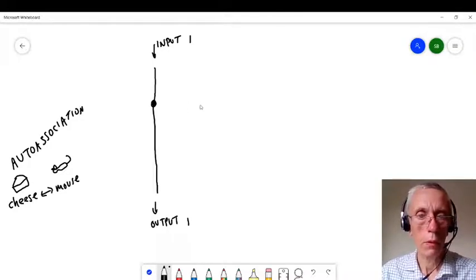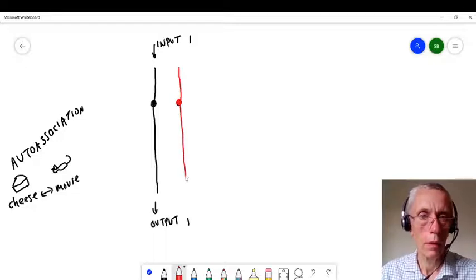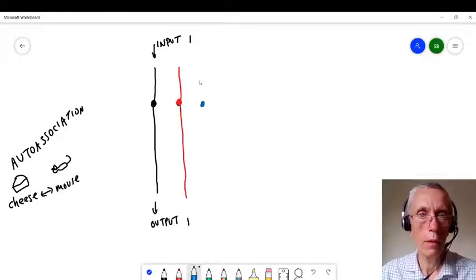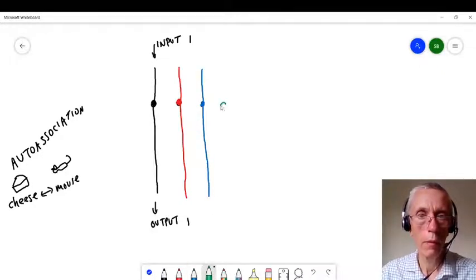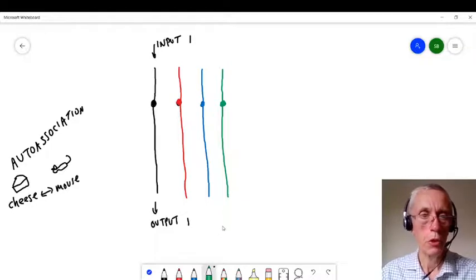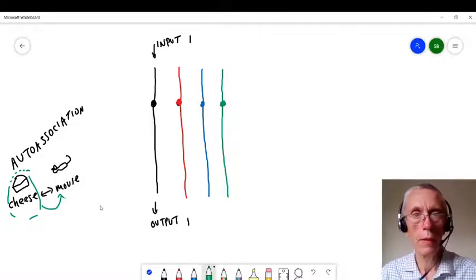So I'm going to add now a few more neurons. I think what I'll do is I'll make them a slightly different color. That'll help, I think. Got a red one, and a blue one, and a green one. So the idea is that once I'm given some sort of picture, say I'm just given the cheese, I want then to be able to associate that with mouse.